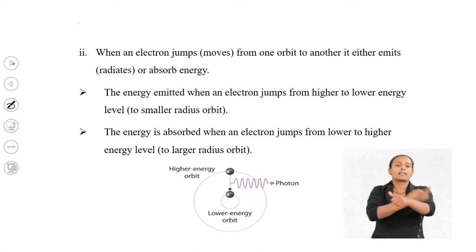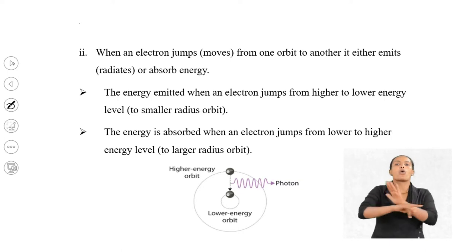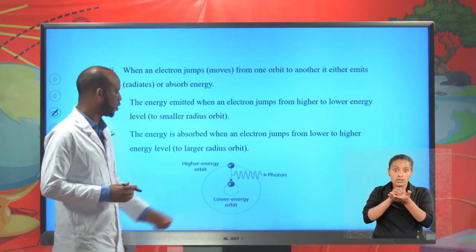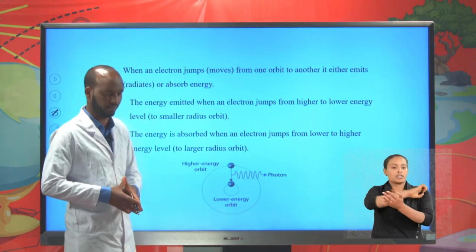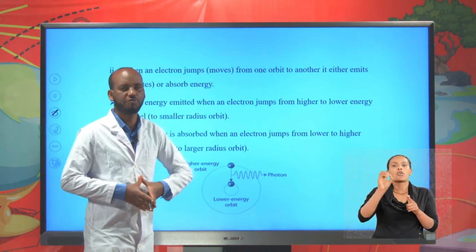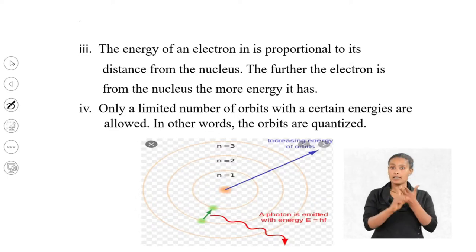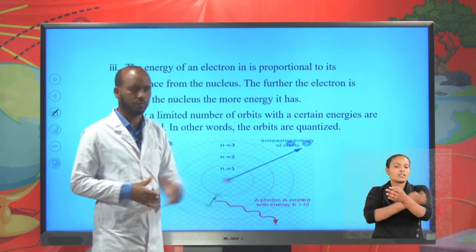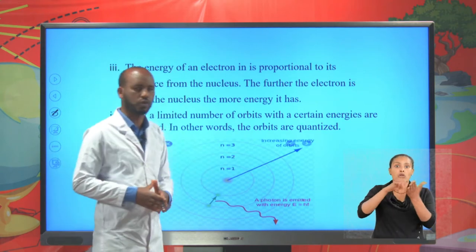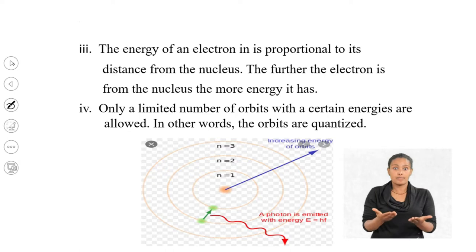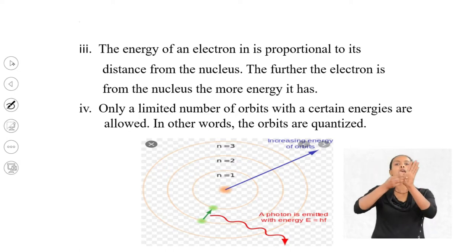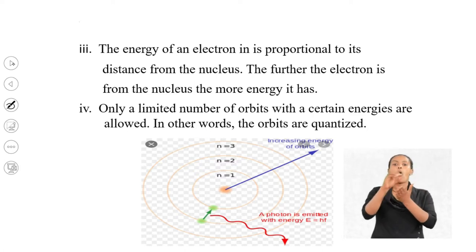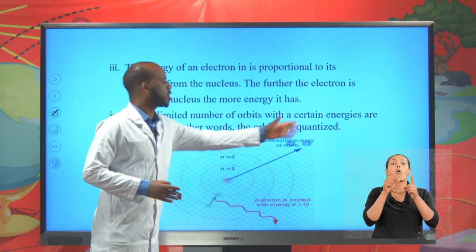The energy is emitted when an electron moves from a higher energy orbit to a lower energy orbit. Postulate three: the energy of an electron is proportional to its distance from the nucleus — the farther the electron is from the nucleus, the more energy it has. Postulate four: only a limited number of orbits with certain energies are allowed. In other words, the orbits are quantized: n = 1, n = 2, n = 3, and so on.